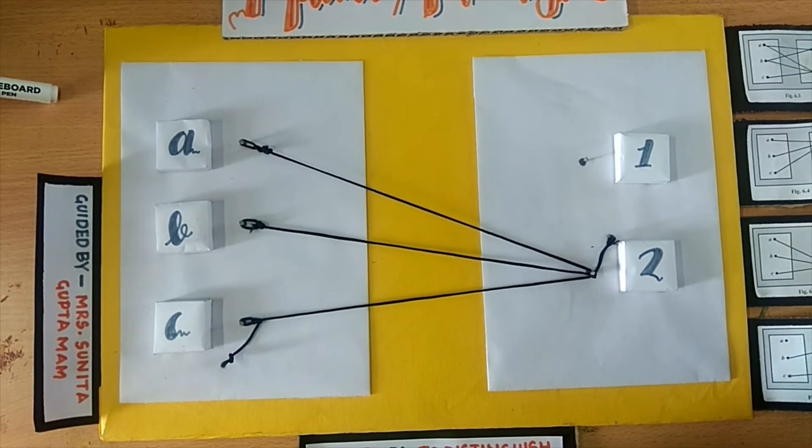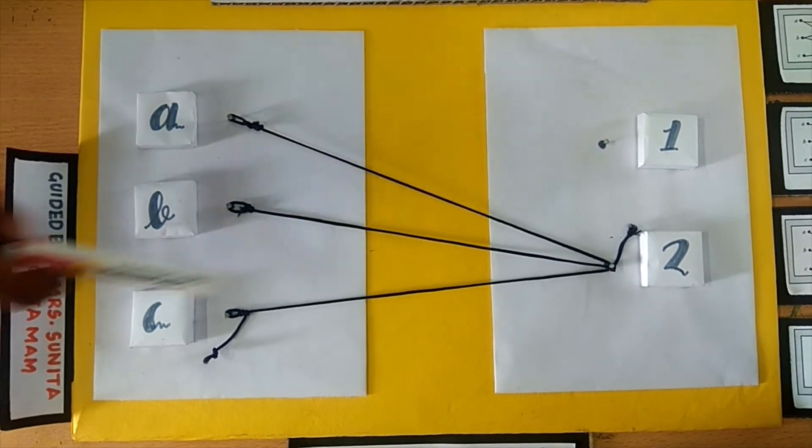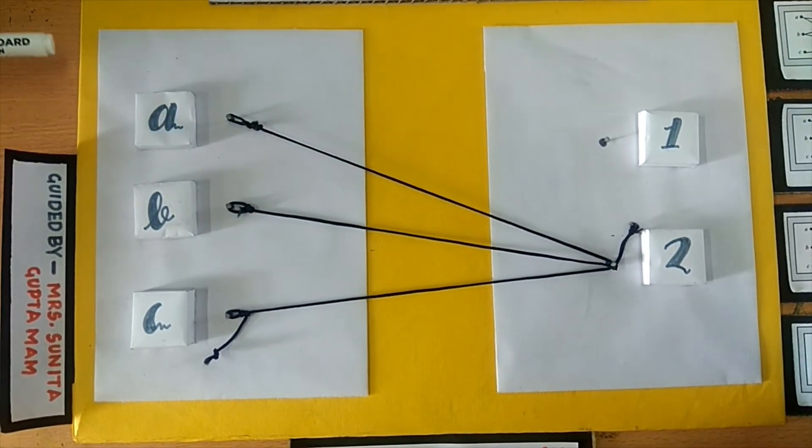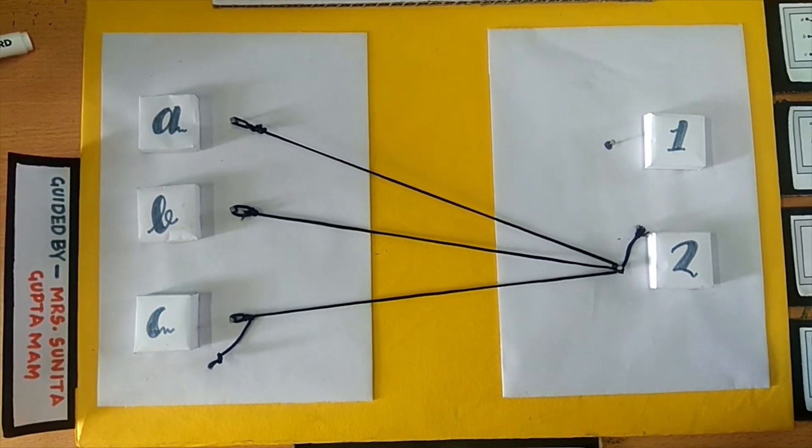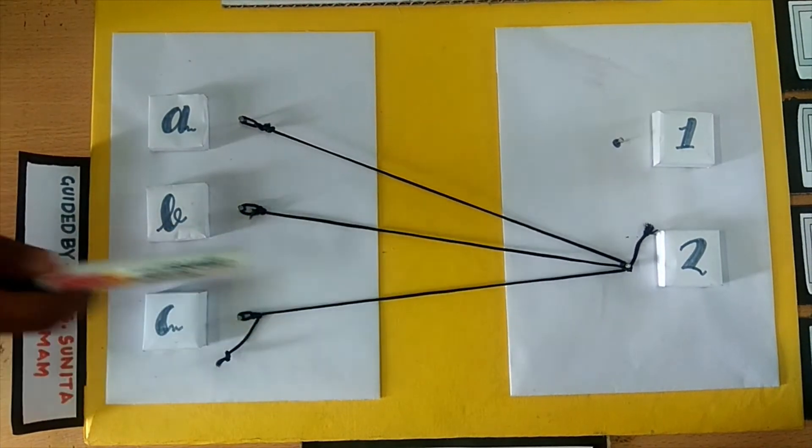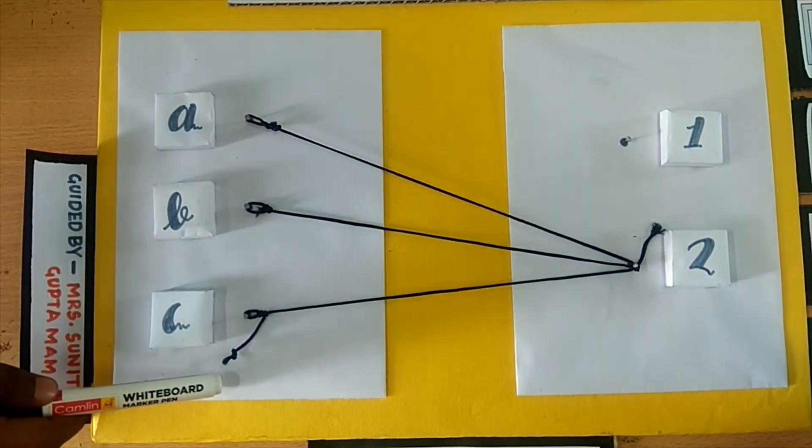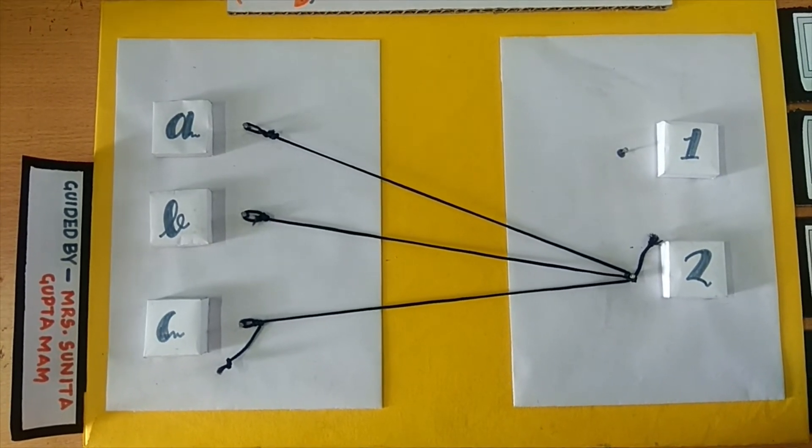If we go to figure 6.5, it is a function not a relation because here A, B and C are related to element 2. All elements of the first set are related to one element of the second set and the ordered pairs are A2, B2, C2. So each element of the first set has a unique image in the second set, so it is a form of function.